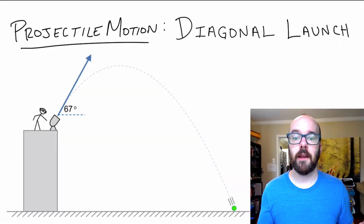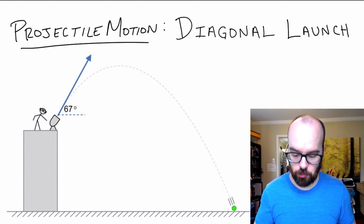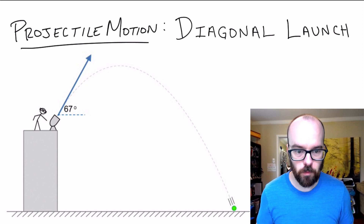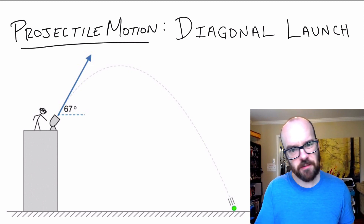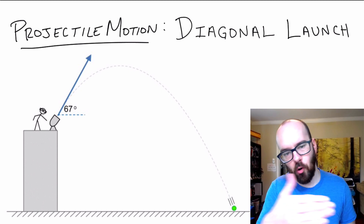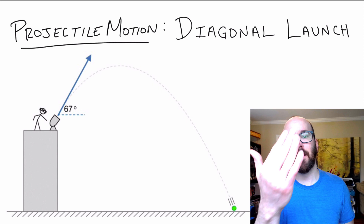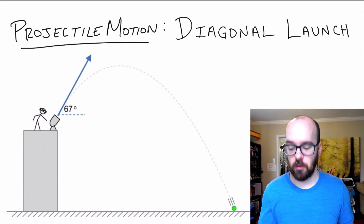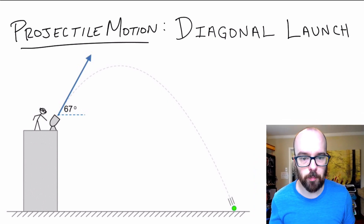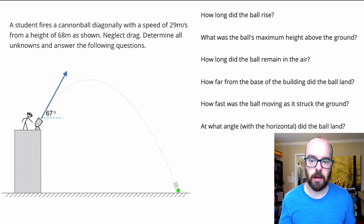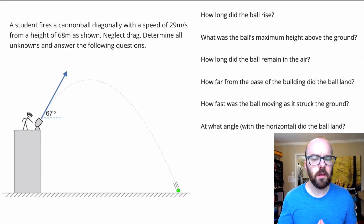In this video, we're looking at a diagonally launched projectile motion problem. Instead of just a horizontal launch, this is launched over and up, or at an angle, and so we'll see how to break that problem down in this video.